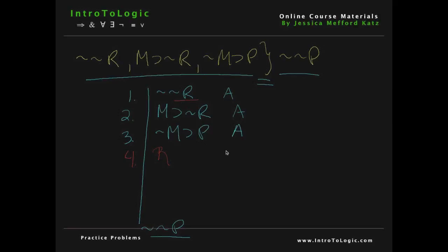Now that we have r, we can ask ourselves: is there anything we can do with r? It turns out there's actually nothing more we can do with the letter r. The only other place we see it is in premise 2, and we can't use it for modus ponens because it's not the antecedent. It looks like the only way you could use r is if we had 'not not r' for modus tollens. So we actually didn't need to do line 4, but this is a good example of cases where you might end up having more lines than you need. That's okay — you can just leave line 4. There's no need to erase it; this is just part of the practice of doing logic.